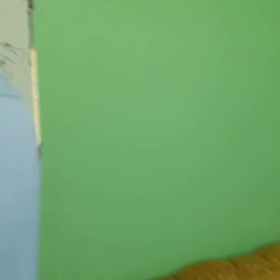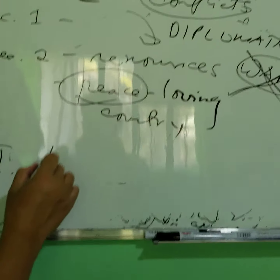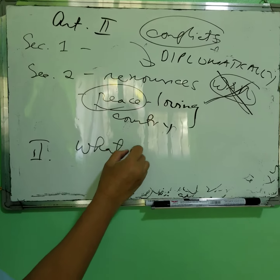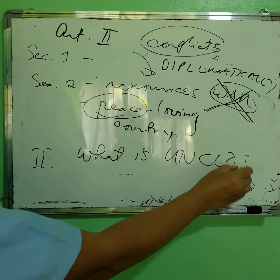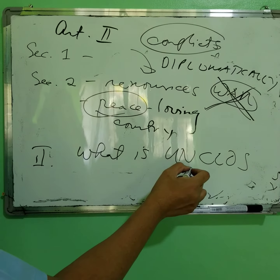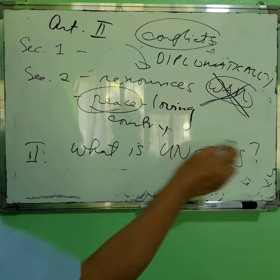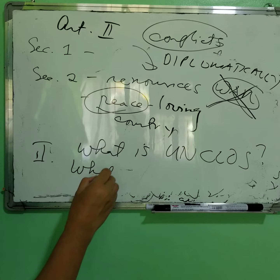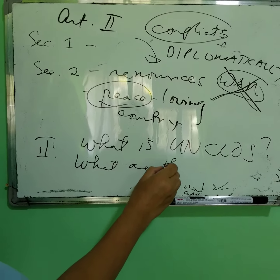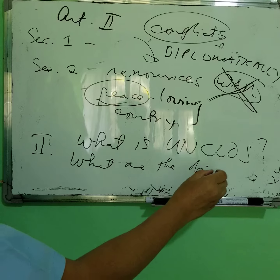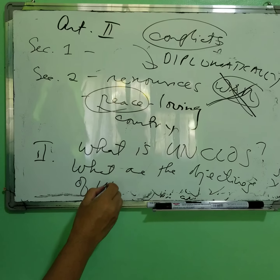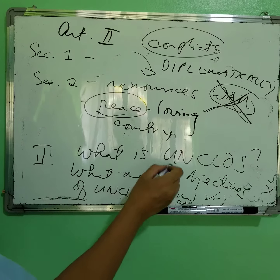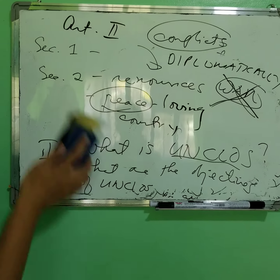Number two: What is UNCLOS? UNCLOS is the United Nations Convention on the Law of the Sea. What are the objectives of UNCLOS? So you need to read UNCLOS.